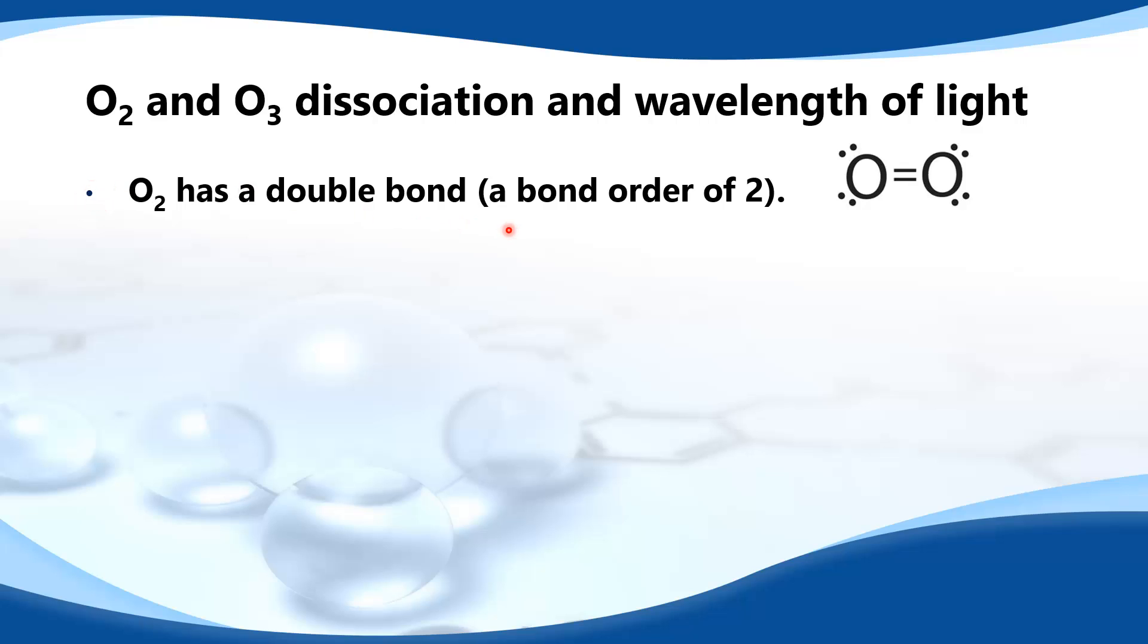O2 has a double bond, that means it has a bond order of 2, and here you can see the double bond between the two oxygen atoms.